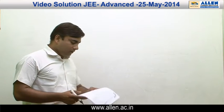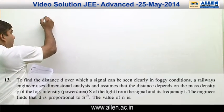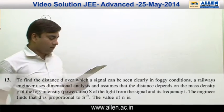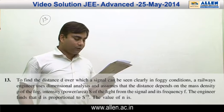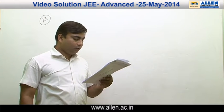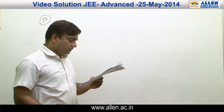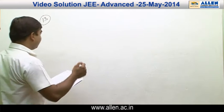Now let us come to question number 13. It is a simple question, simple based on dimensional analysis. The question says to find the distance d over which a signal can be seen clearly in a foggy condition. A railway engineer uses dimensional analysis and assumes that the distance depends upon mass density rho, depends upon intensity, and depends upon the frequency. So there are three parameters on which the distance depends.